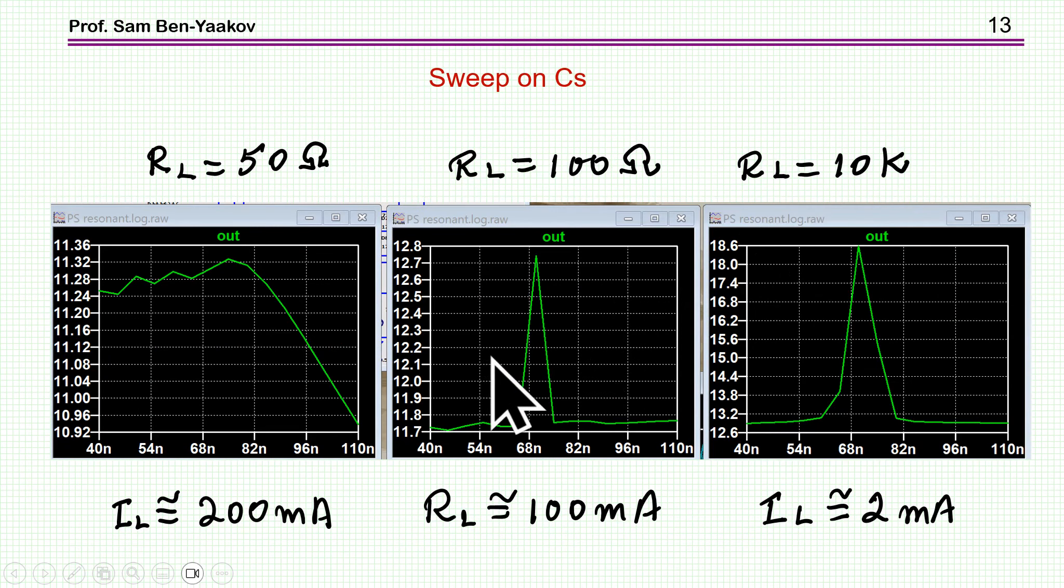I'm showing here a case where I've changed the resonant capacitor for different load resistors, starting with 50 ohm resistor, then 100, then 10k. At 50 ohm we have sort of a regular response. The whole change is between 11.5 or 3 to just about 11, for a very large change of capacitance. Here and here, however, we got something strange. Around the 70 nanofarad, which is the resonant capacitor required for 100 kilohertz, we see here a peak. In the case of 100 ohm this is not too bad, but in the case of open circuit, 10 kilohm, it's fairly high. Actually it's dangerous. So there is a problem here. The question is, why?